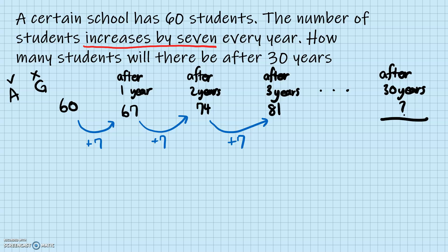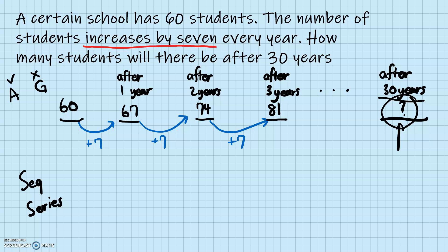The question asks how many students will there be after 30 years — is this a sequence or a series problem? Sequence is concerned with each individual term, whereas series is concerned with adding them all together. The question is asking for just the number of students after 30 years, not the total across all years, so this is a sequence problem — we don't need to add them all up.